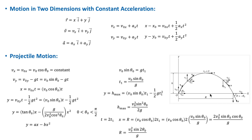For motion along the x-axis, since there is no force of gravity in that direction — gravity acts only along the y direction — the acceleration along x is zero. Therefore the x component of velocity remains constant throughout the projectile motion.